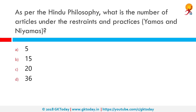As per Hindu philosophy, what is the number of articles under the restraints and practices or Yamas and Niyamas? The Yamas and Niyamas are yoga's ethical guidelines laid out in the first two limbs of Patanjali's Eightfold Path. The Yamas are things not to do or restraints, while the Niyamas are things to do or observances. Together they form a moral code of conduct. The correct answer is 20.